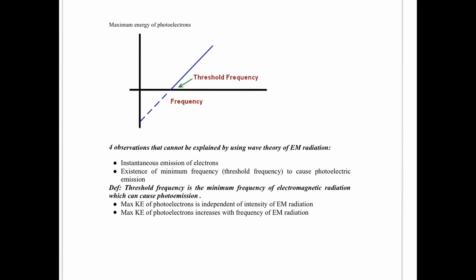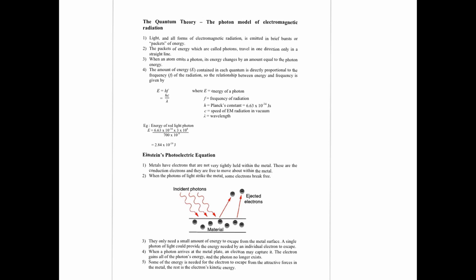Einstein managed to explain photoelectric emission by borrowing an idea from Max Planck. Max Planck was the first scientist of that era to suggest that EM radiation are not waves but particles — packets of energy called photons. According to Max Planck, each photon's energy is given by E = hf, where h is Planck's constant and f is the frequency of EM radiation. So E gives you the energy of each photon.